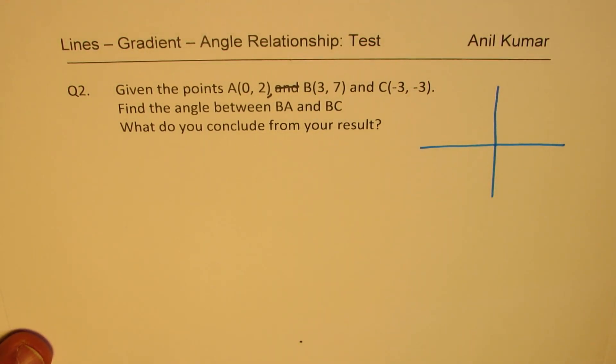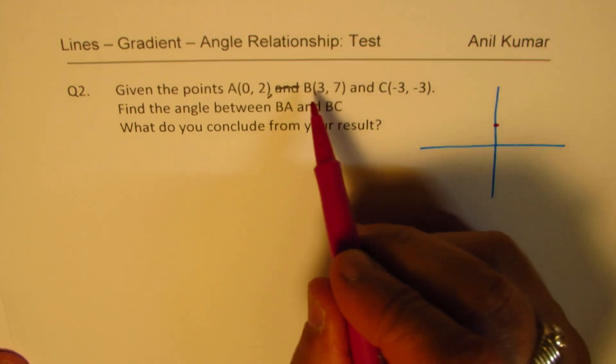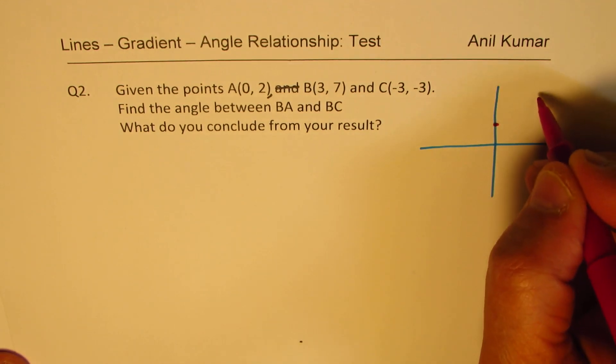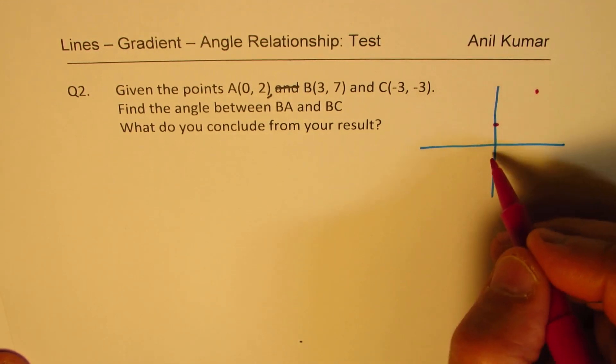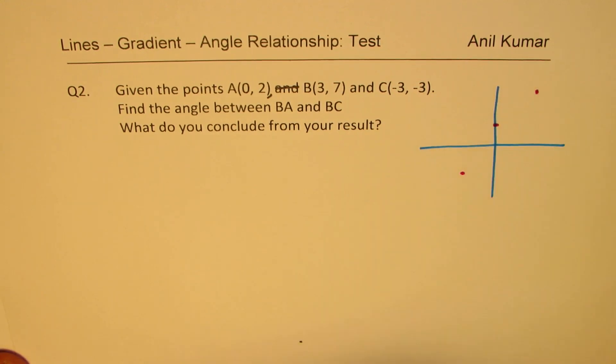So the points here are, one is (0, 2), okay, so somewhere here. I'm making a rough sketch. 3, 7, so somewhere there. And minus 3, minus 3, maybe somewhere here. So kind of, we have these points.